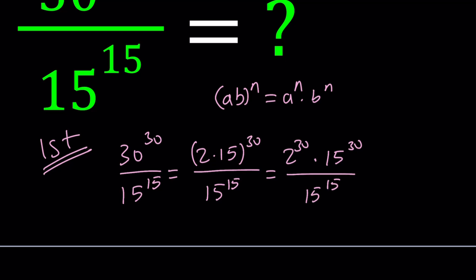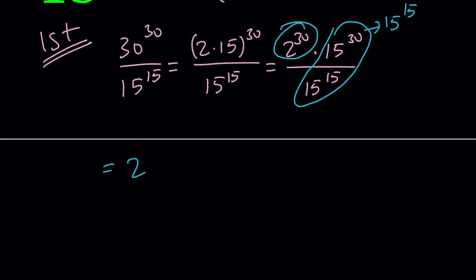And then I'm going to divide these two powers because they have the same base. So all I need to do is subtract their exponents. Remember the property a to the x divided by a to the y can be written as a to the power x minus y. So when you divide these two things, you get 15 to the power 15 from here. So now along with this, our expression becomes 2 to the power 30 multiplied by 15 to the power 15.